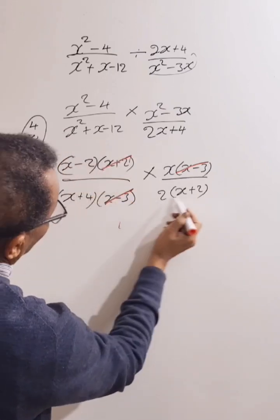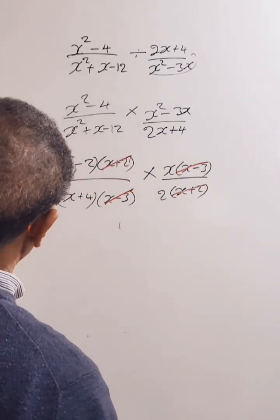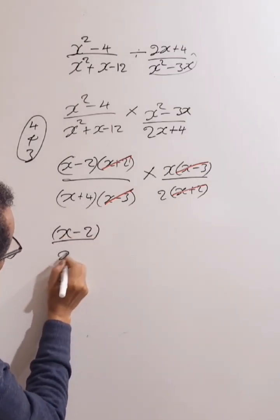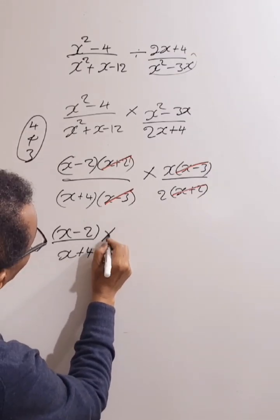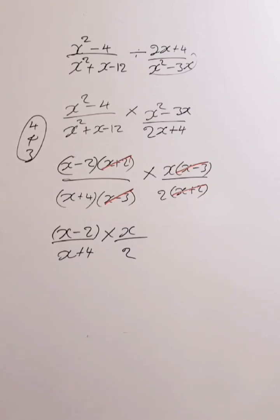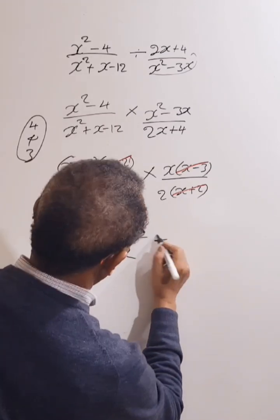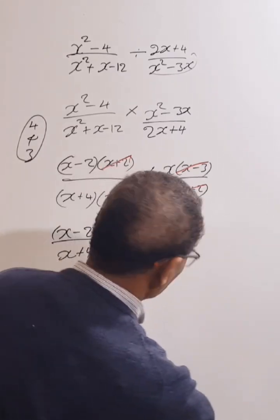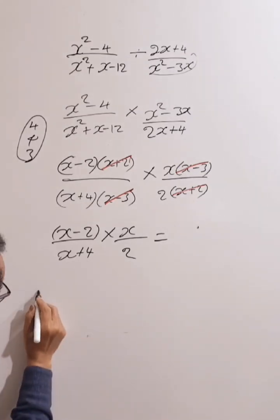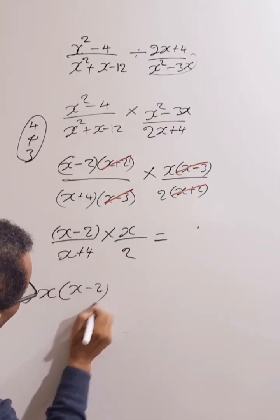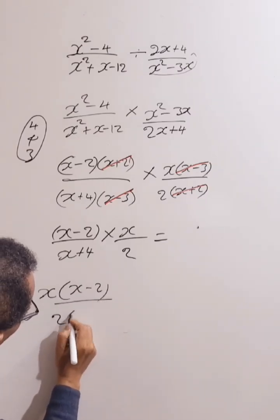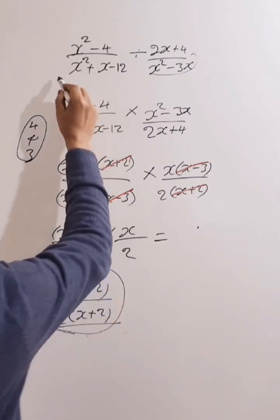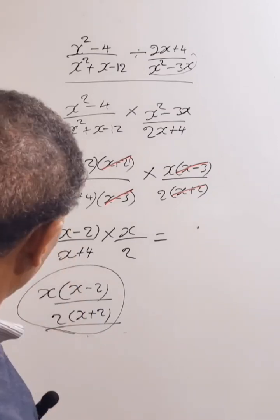We cancel this one, and this will cancel this one. We are left with x take away two over x plus four, times x over two. So if we multiply this, it gives us x times x minus two over two times x plus four. So this is the simplest form of this expression. Thank you very much.